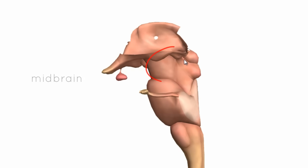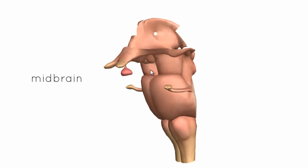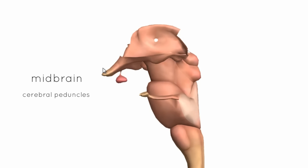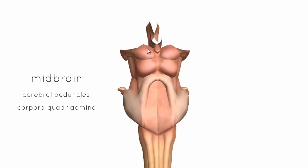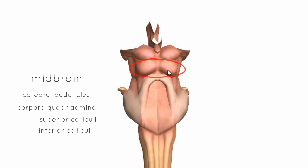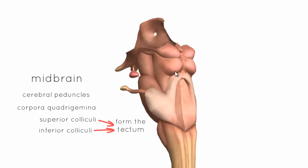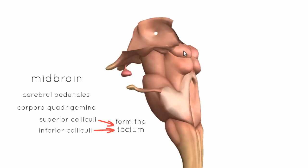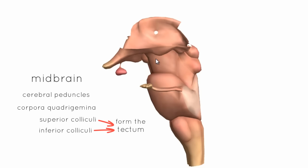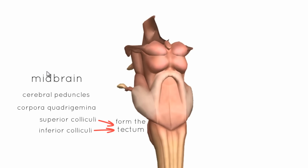The midbrain consists of cerebral peduncles at the front, and at the back you've got these little hills called the corpora quadrigemina — Latin for 'quadruplet bodies' because there are four bumps. The top ones are called superior colliculi and the bottom two are called inferior colliculi, meaning 'little hills' in Latin. These colliculi sit on the tectum, which means 'roof' in Latin, forming the roof of the midbrain.